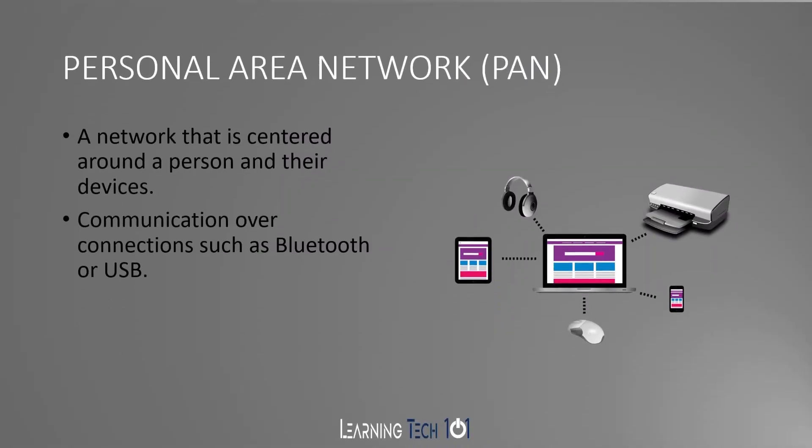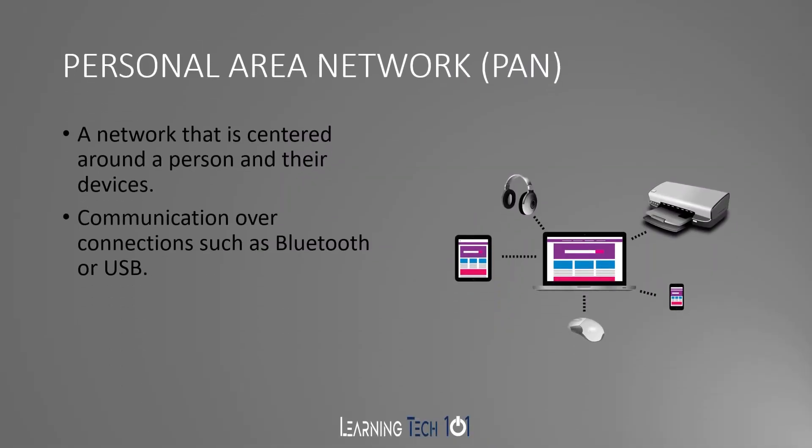We are first going to start off with the personal area network. This is a network that is centered around a person and their devices. Communications such as Bluetooth or USB are going to be considered personal area networks. This includes things connected to your laptop, such as your mouse, keyboard, or anything plugged into USB.